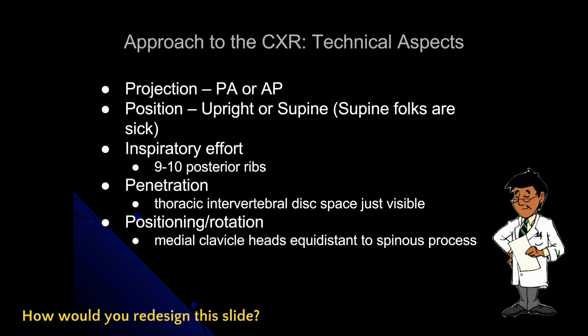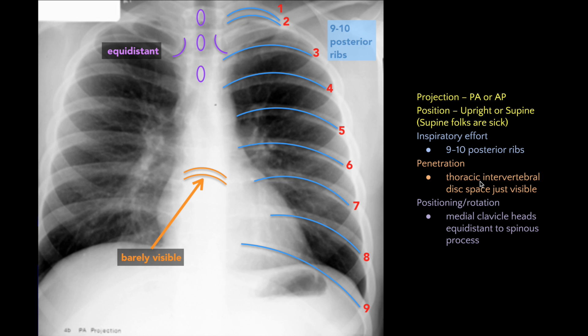Let's look at another slide — this one on the approach to the chest x-ray. It mentions that projection can be posterior-anterior or anterior-posterior, inspiratory effort should show 9 to 10 posterior ribs, penetration means vertebral discs should just be visible, and positioning means the medial clavicle heads should be equidistant from the spinous processes. How would you redesign this? If we're talking about a chest x-ray, the most relevant picture is a chest x-ray, so I put one on and made it fill the whole slide. I said, look here — here are the posterior ribs, and you should be able to see 9 to 10 of them as outlined.